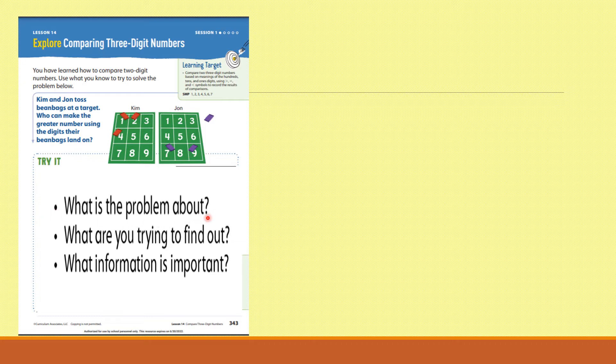What is this problem about? What are you trying to find out? And what information is important? Let's look at where the beanbags landed. Kim landed on three squares. She landed on the four, the one, and the two. So she can make a three-digit number. John landed on the seven and nine. One bag did not make it to the target, so he can make a two-digit number.